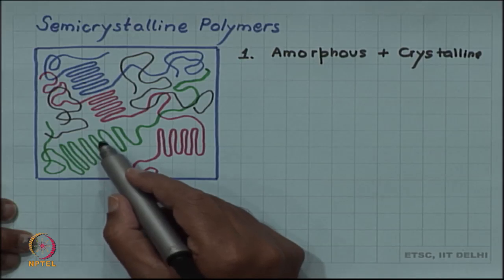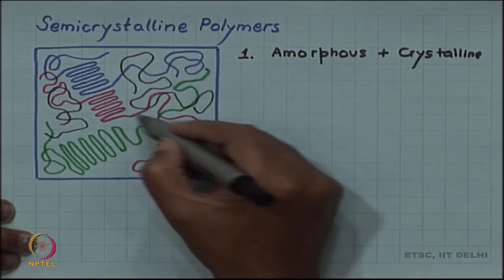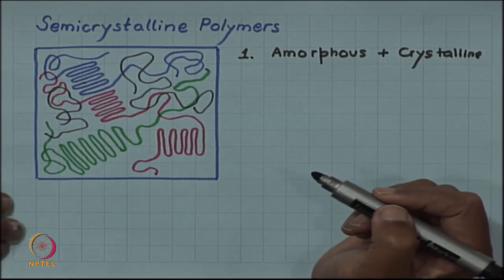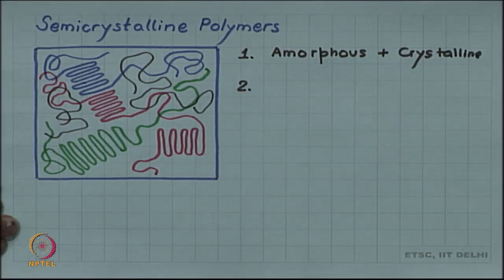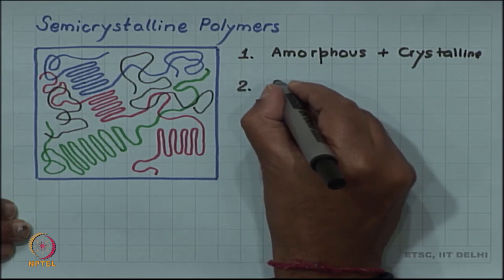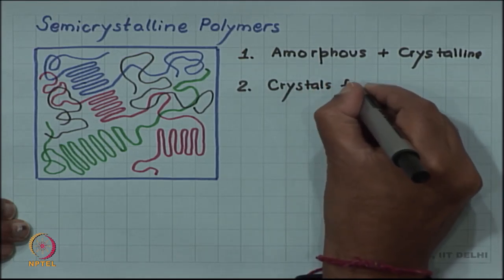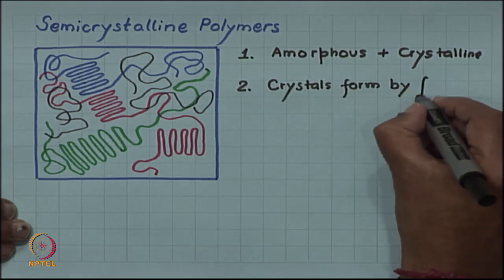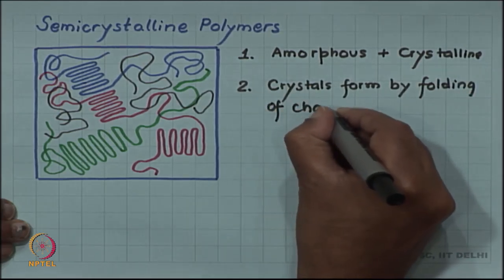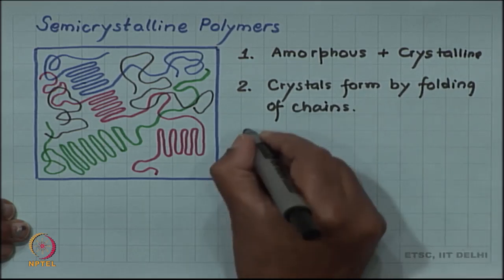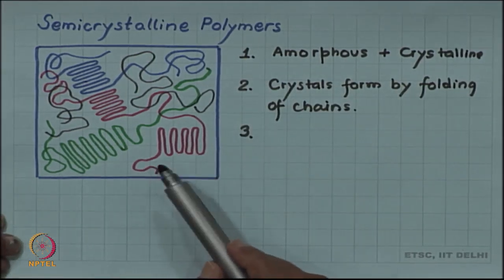Where I am showing parallel chains, I am trying to represent the crystalline region, and where I have shown randomly wiggling chains, that is the amorphous region in the same polymer sample. The crystalline region — the crystals form by chain folding, which really means, and this is a very important point, that the length of a given chain is much much longer than the length of the crystal.